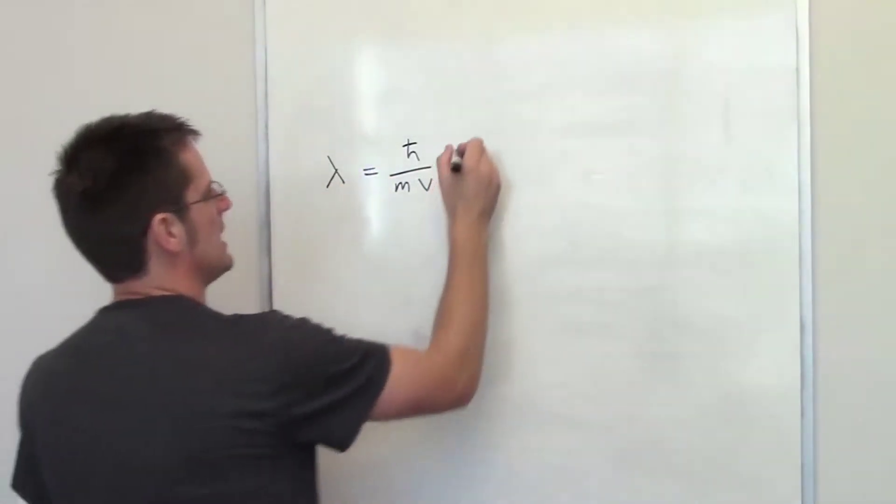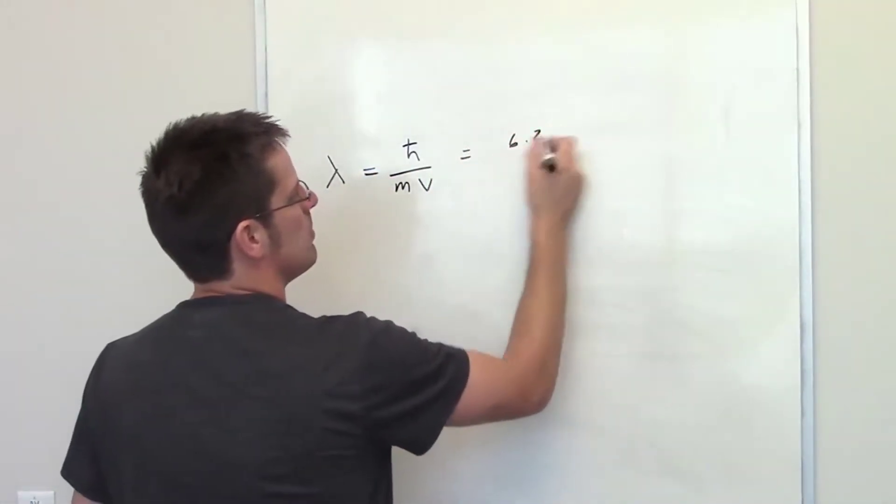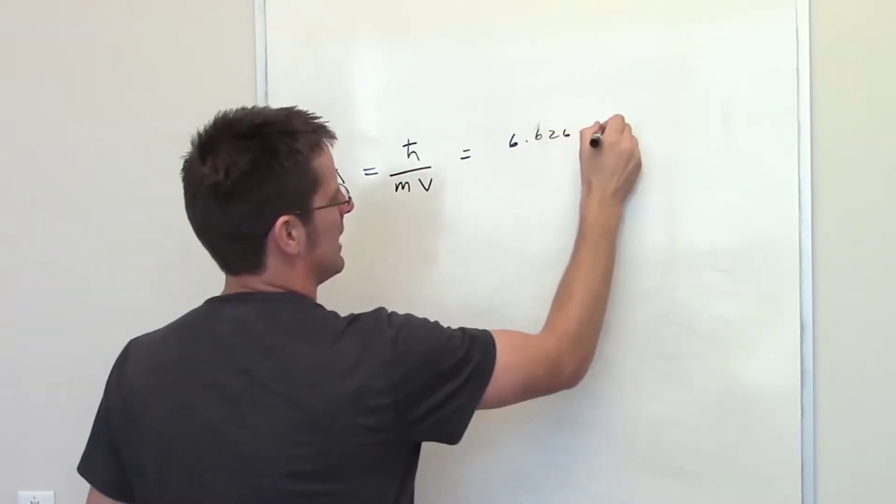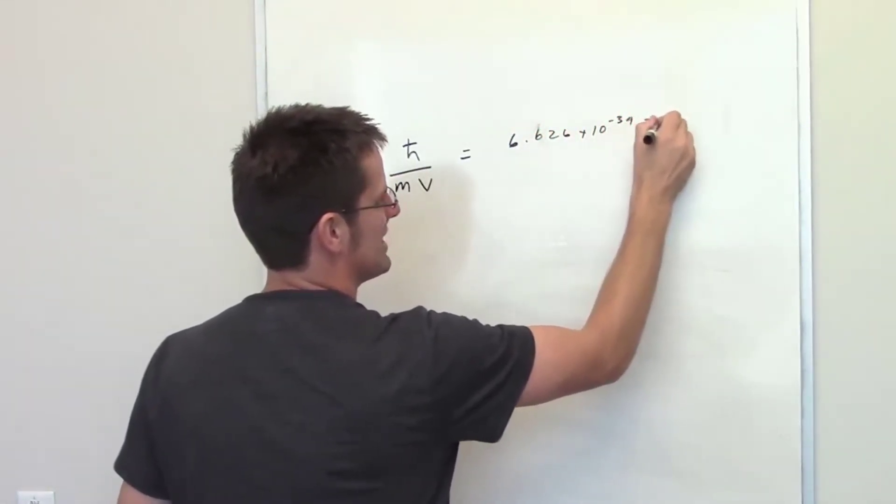Planck's constant is a very, very tiny number. You'll remember that it's 6.626 times 10 to the negative 34 joules times seconds.